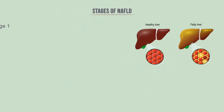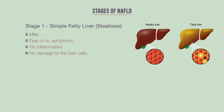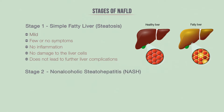There are four main stages of NAFLD. The first is called simple fatty liver, or steatosis. This type is very mild, usually showing few or no symptoms, producing no inflammation or damage to the liver cells. This condition does not typically cause liver damage or lead to further complications.